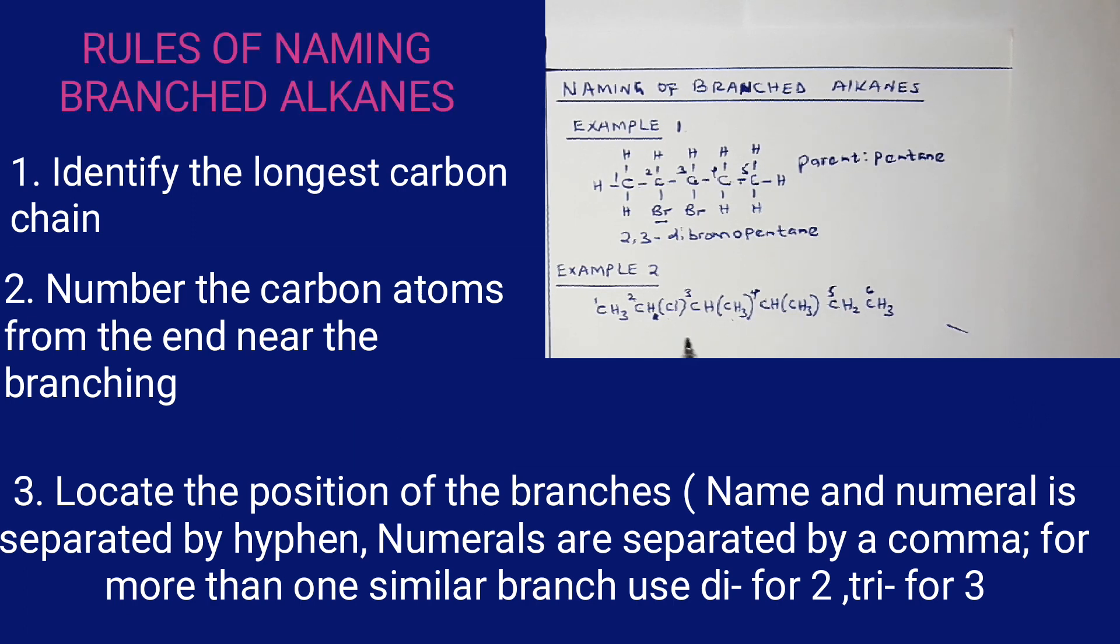So now we have three branches here. We have a chloro attached to carbon number two, we have a methyl attached to carbon number three, and we have a methyl attached to carbon number four.